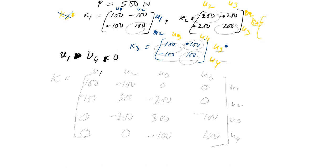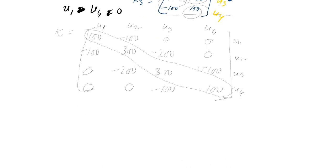You can see the diagonal values are all positive — the diagonal of the stiffness matrix should be positive. The matrix should also be symmetric, which you can check. This is the global stiffness matrix K. The finite element equation is K·u = f.